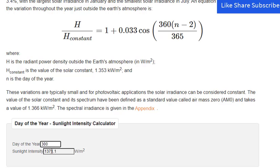Where H is the radiant power density outside the Earth's atmosphere in kilowatts per square meter, H constant is the value of the solar constant 1.353 kilowatts per square meter, and n is the day of the year.